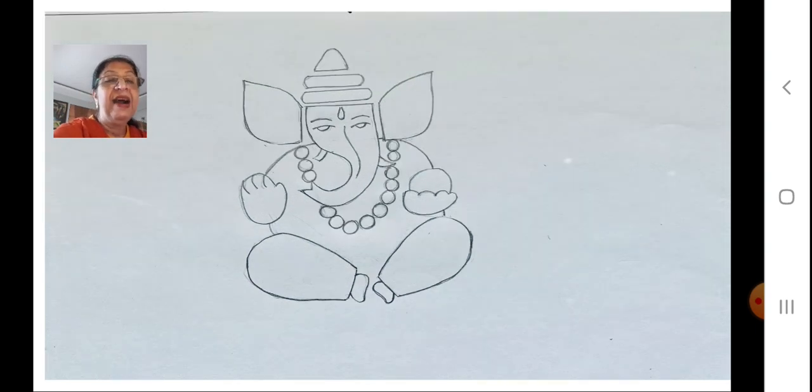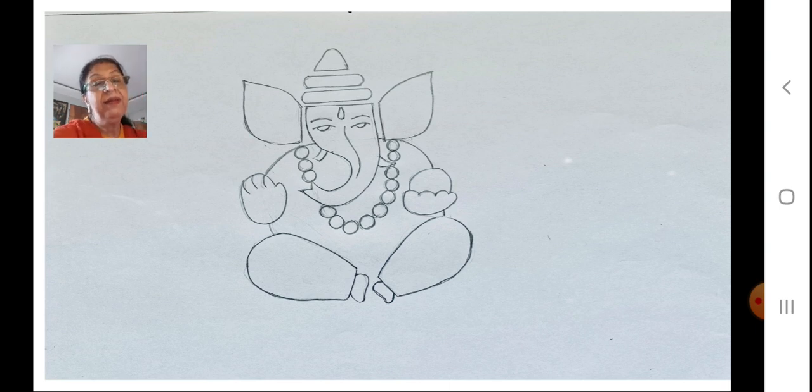Now after that you make the body part. That is the stomach. After completing the stomach you make a mala of beads. You can see circles. That is the easy way of doing it. Now the drawing of Ganapati ji is already ready. But do we draw something else with it? Yes. What?